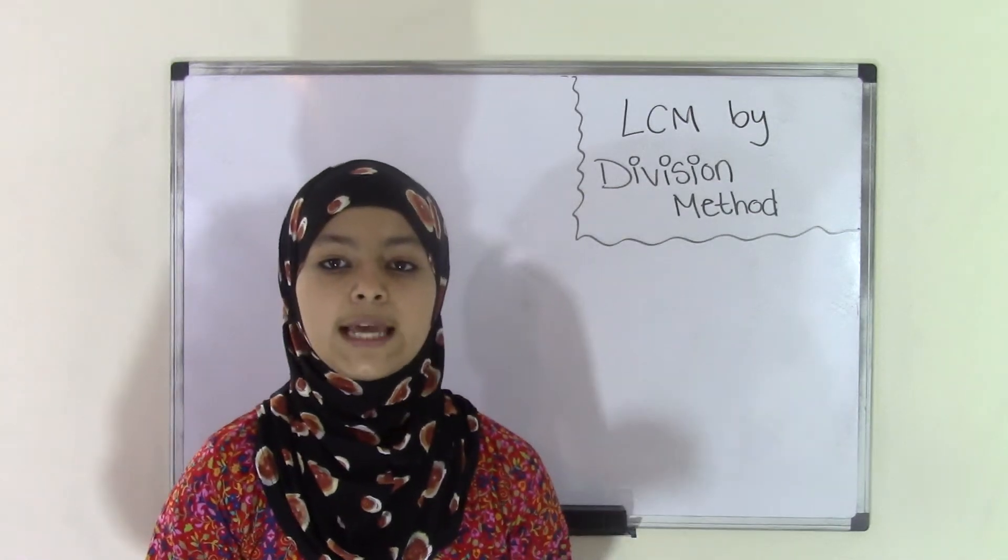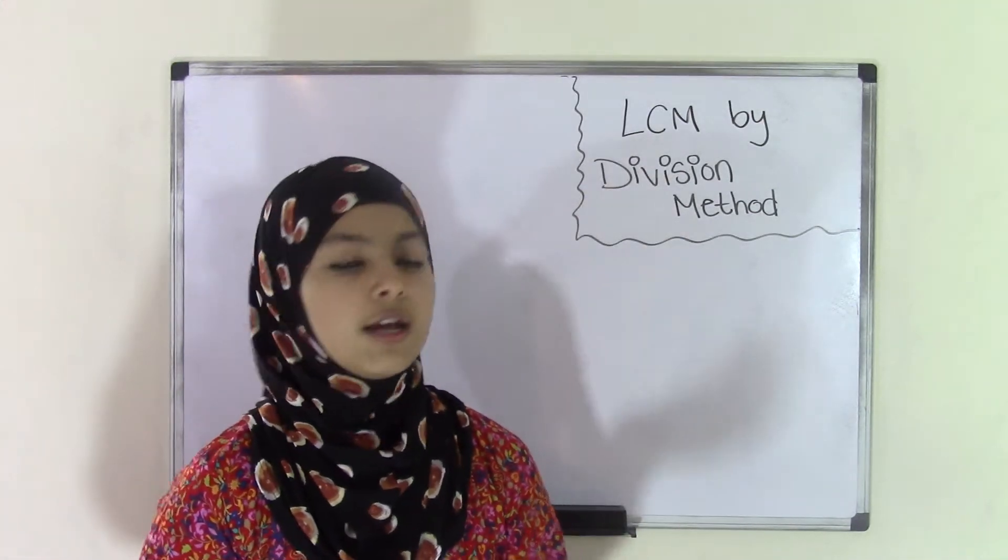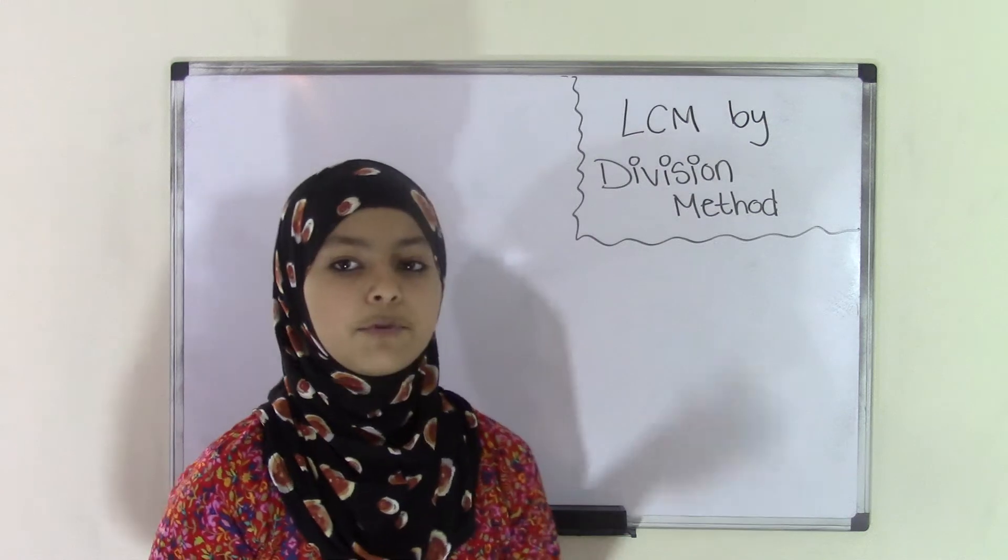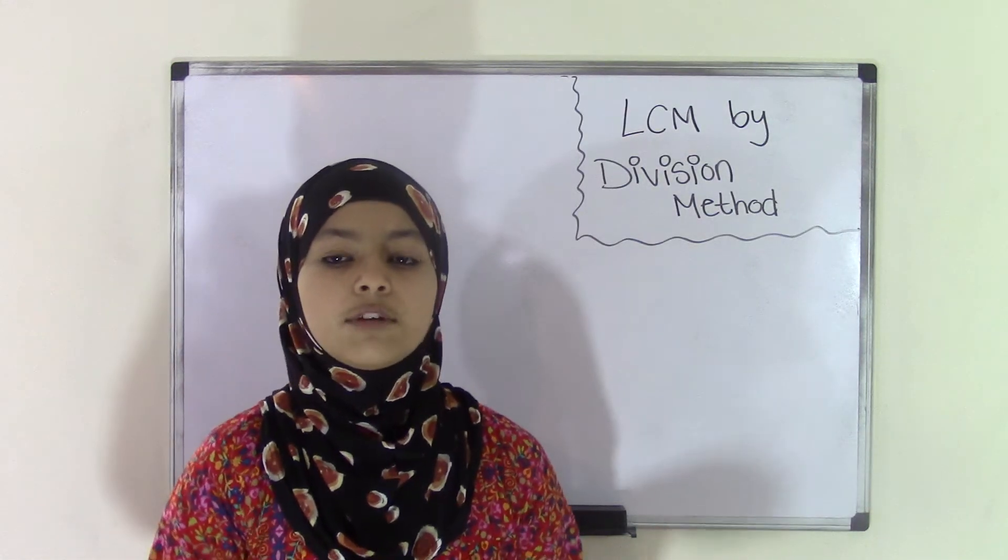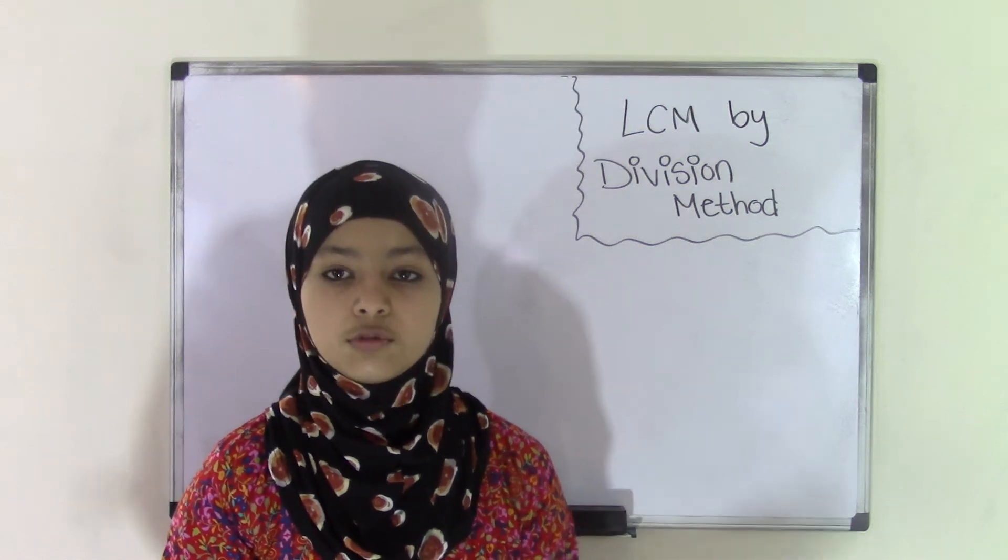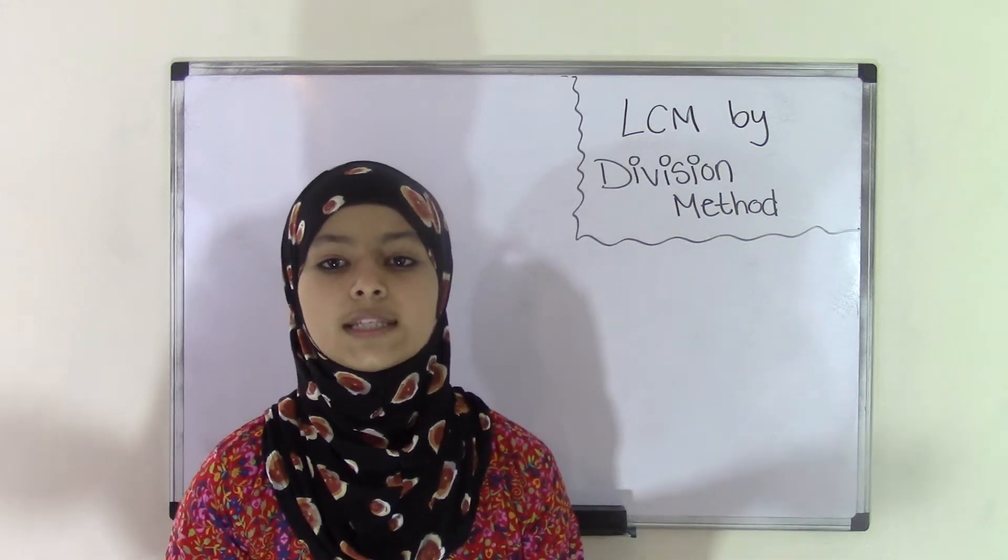In our previous video, we talked about LCM by prime factorization method. This is pretty much the same thing, except you're using the division method, which is just simple division. In this video, we'll learn how to find the least common multiple of two numbers using simple division.